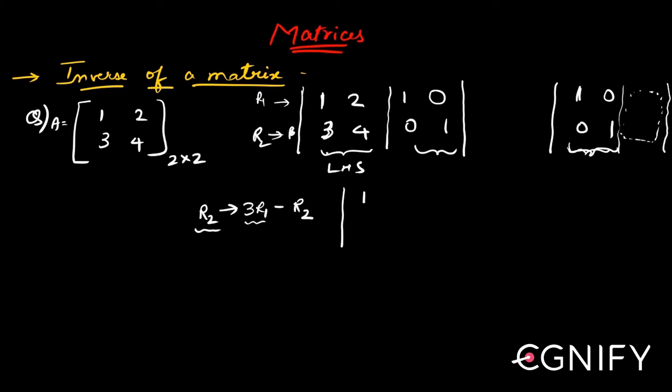So this becomes 1, 2, the first row remains as it is. First row remains as it is, the second row is now 3 into 1 minus 3, this is 3 into 2 minus 4, this is 3 into 1 minus 0, and this is 3 into 0 minus 1, right? That's something, this is how your second row will now look like.